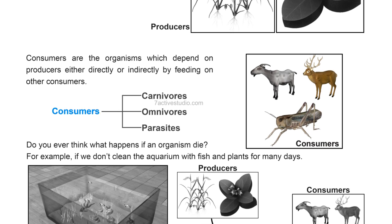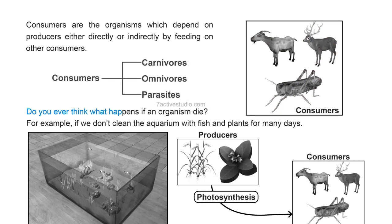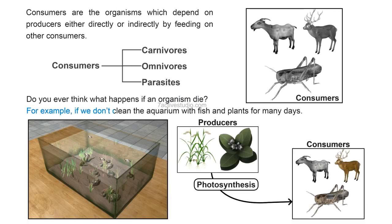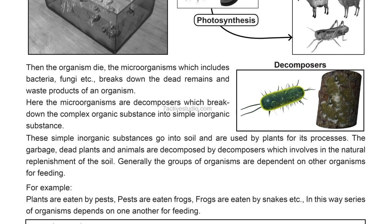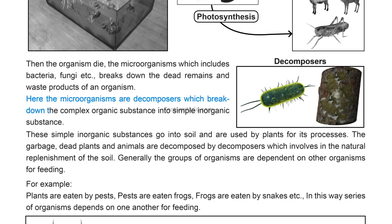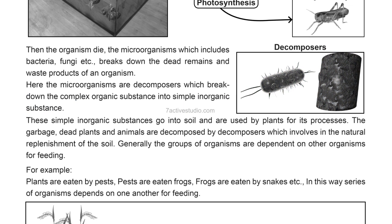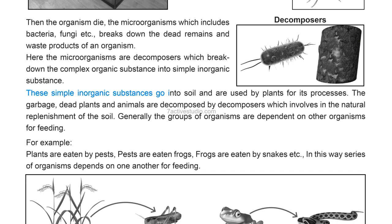Consumers are classified as carnivorous, omnivorous, and parasites. When an organism dies — for example if we don't clean an aquarium with fish and plants for many days — the organisms die. Microorganisms including bacteria and fungi break down the dead remains and waste products of organisms. These microorganisms are called decomposers, which break down complex organic substances into simple inorganic substances. These simple inorganic substances go into the soil and are used by plants.